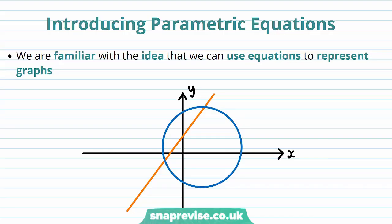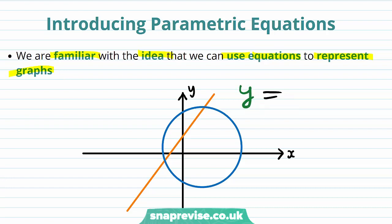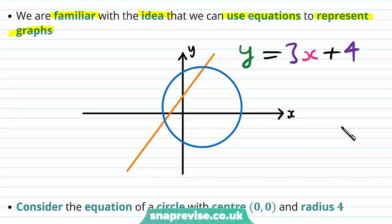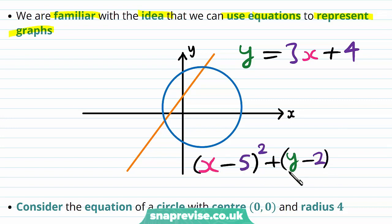So what are parametric equations? We are familiar with the idea that we can use equations to represent graphs. For example we can have a line y is equal to 3x plus 4 and we can graph it on a pair of axes. Similarly we can have a circle: x minus 5 all squared plus y minus 2 all squared is equal to 64.